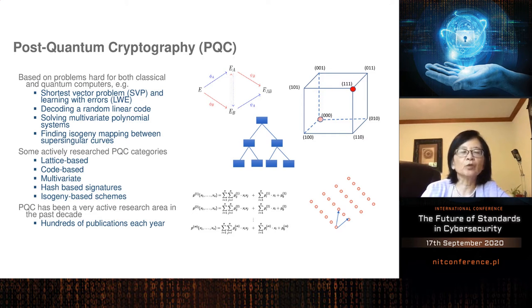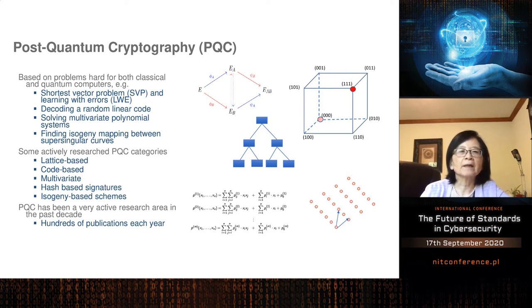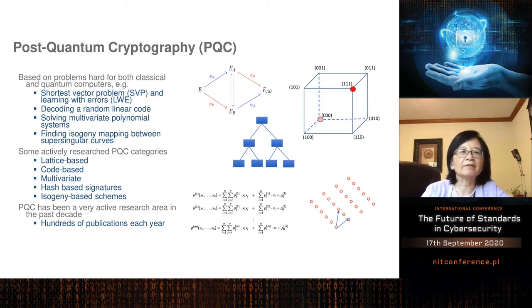The first step is to look for problems which are hard for both classical and quantum computers. The answer is yes, we can find those problems. For example, the shortest vector problem and the learning with errors problem are hard for both. Other hard problems include decoding a random linear code, solving multivariate polynomial systems, and finding isogeny mappings between supersingular elliptic curves.